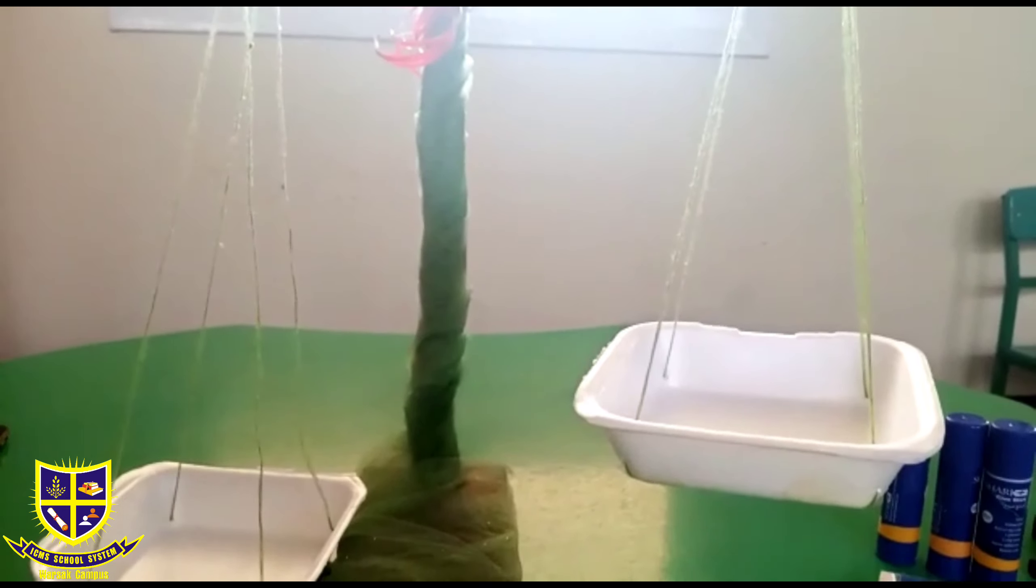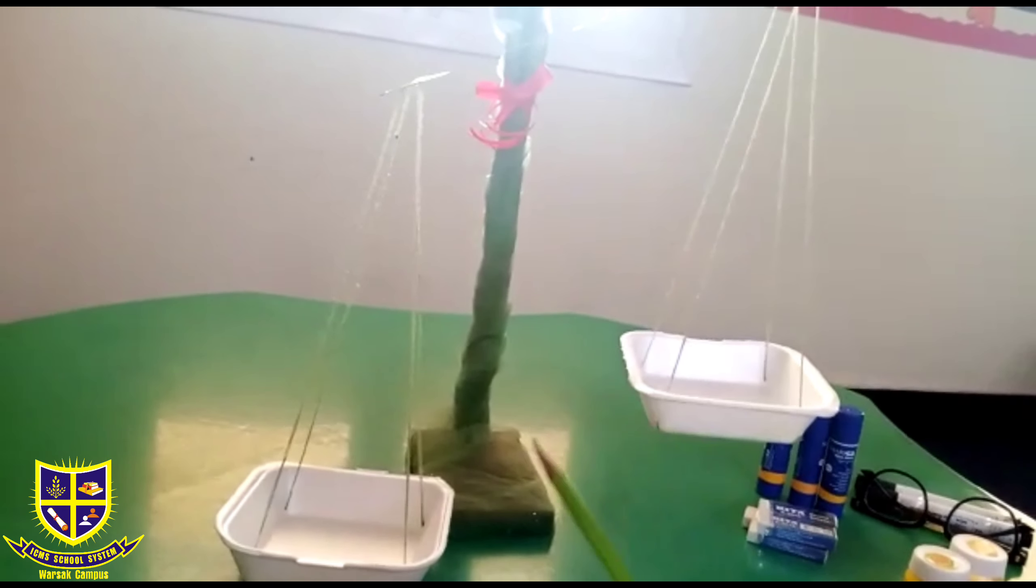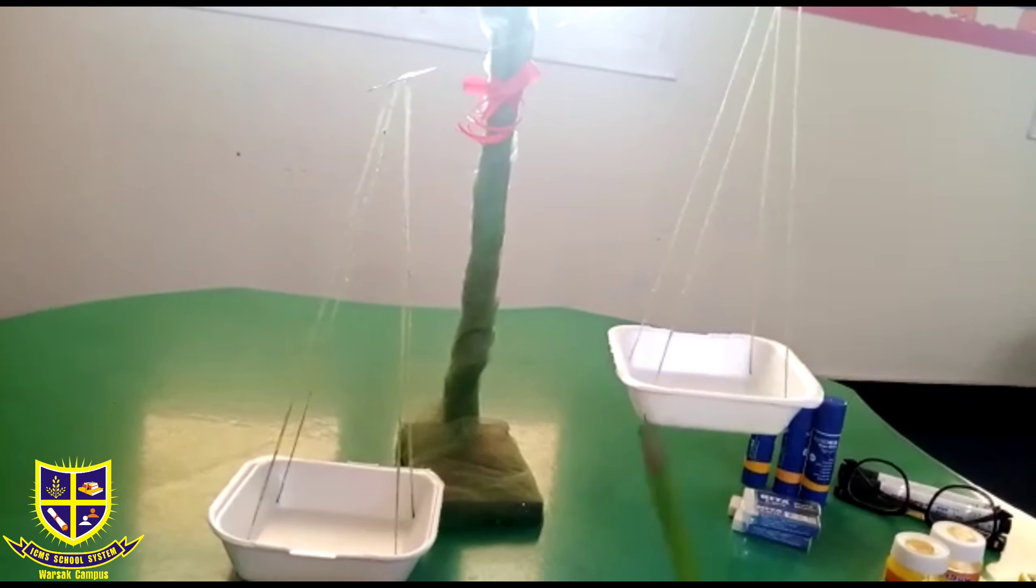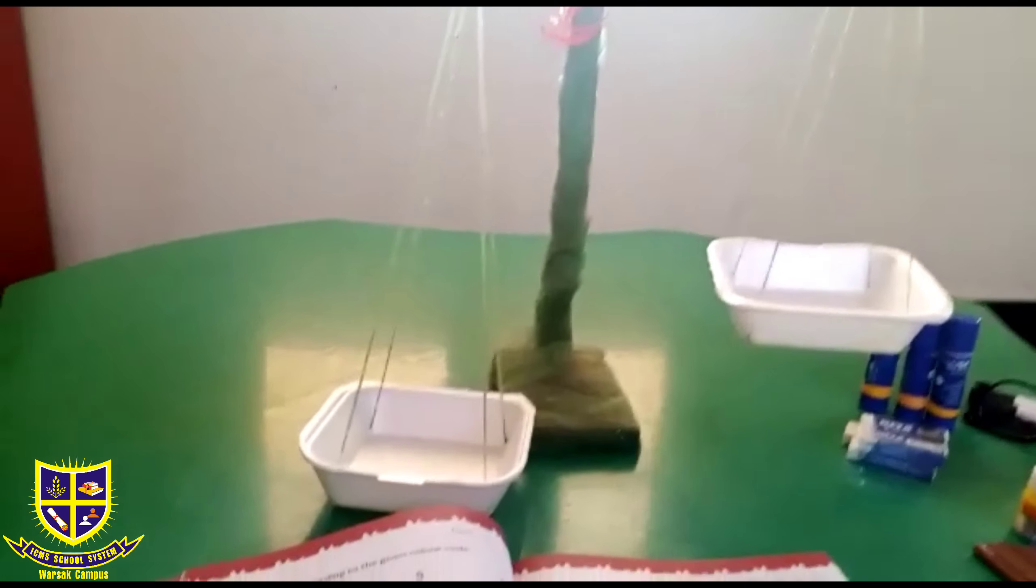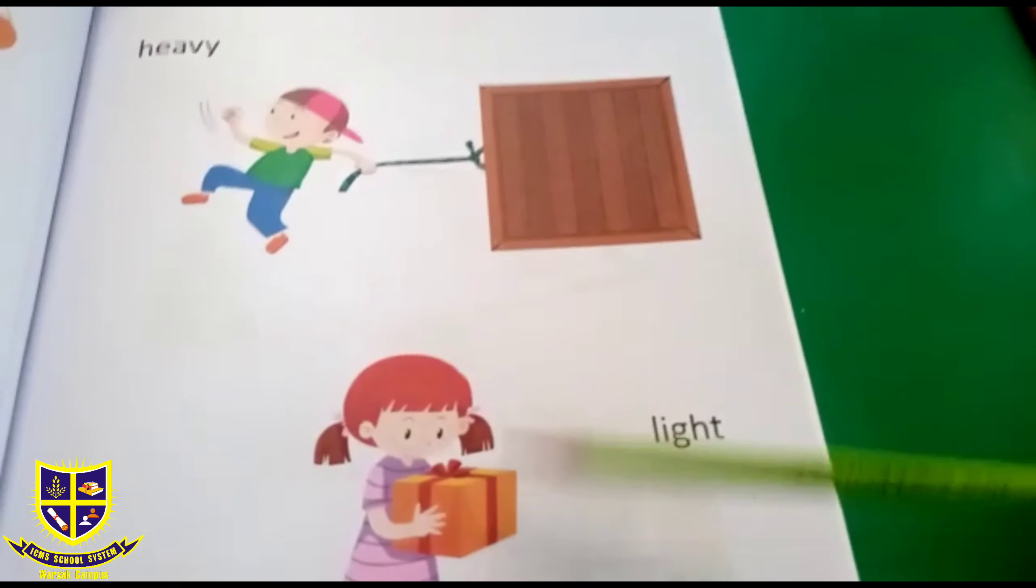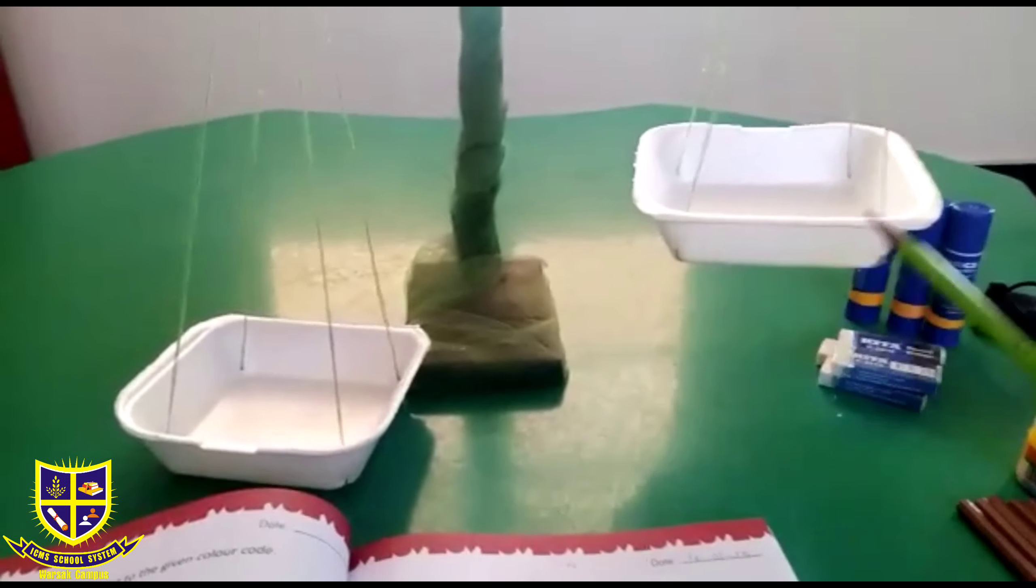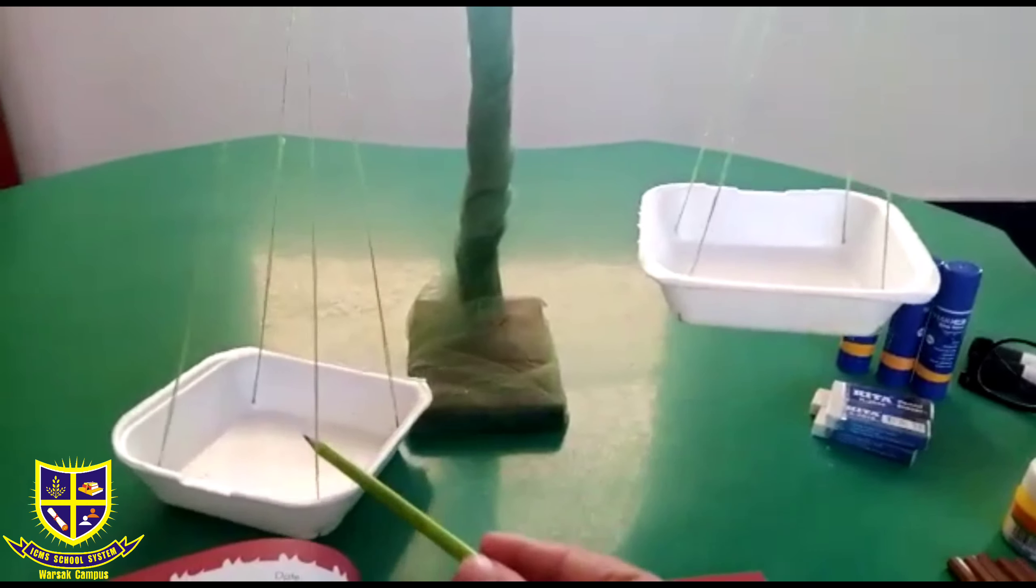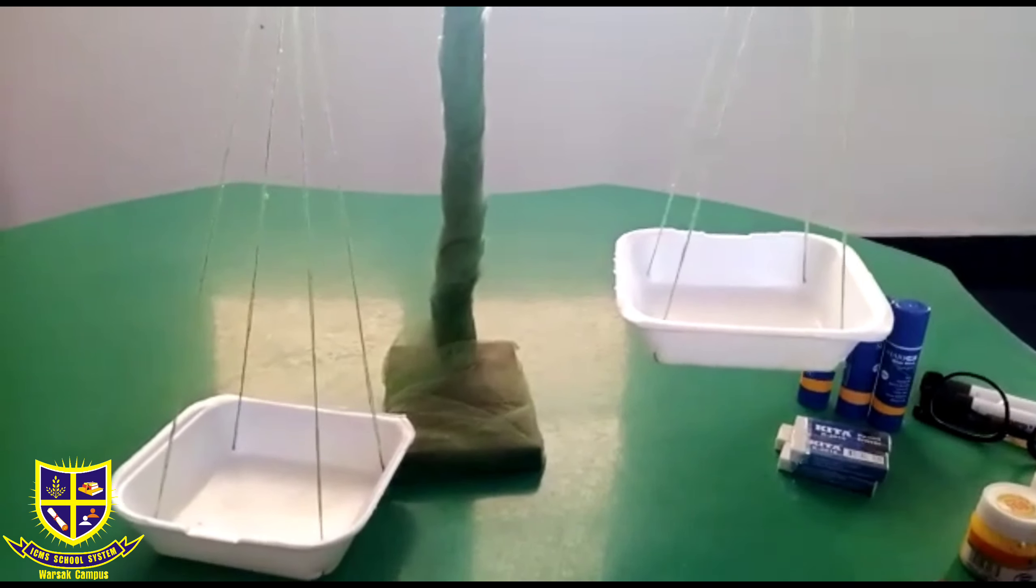I have made a weighing machine for you. I will put the same amount of things just like you have seen in the book. Here are two boxes but one is heavy and one is light. To make you people understand, we will put the same amount of things in this gadget and we will see whether it is heavy or not or light.